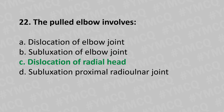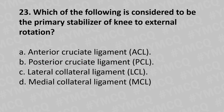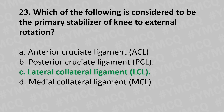Moving to our 23rd question: which of the following is considered to be the primary stabilizer of the knee to external rotation — option A anterior cruciate ligament ACL, option B posterior cruciate ligament PCL, option C lateral collateral ligament LCL, option D medial collateral ligament MCL. And the answer is option C lateral collateral ligament.